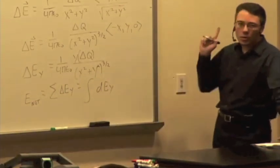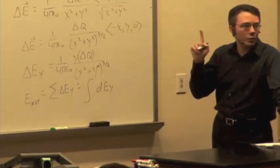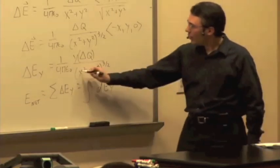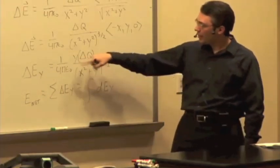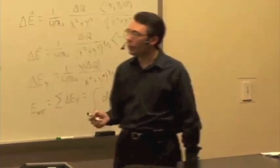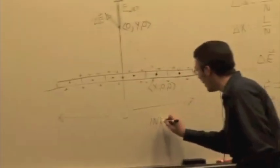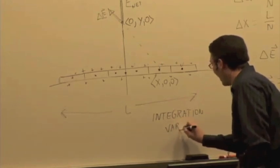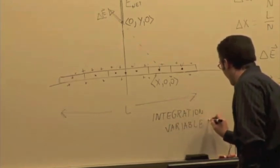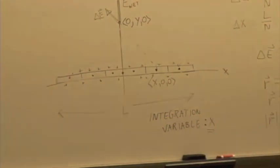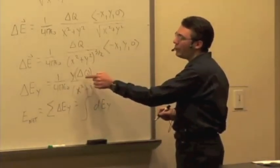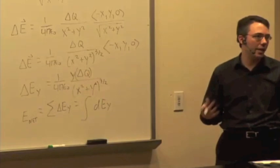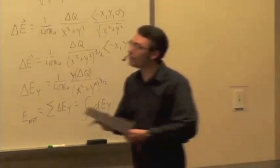This is an integral that we could do, with one problem: we want to put everything in this expression in terms of the integration variable. What's the integration variable? In other words, what's the thing that's changing as we move from one segment to another? The x value. So the integration variable is x. Y is a constant. We have x in the denominator, but we've got to put delta Q in terms of the integration variable. That's the critical step here.